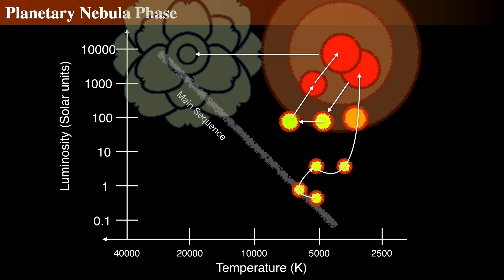As the last of the envelope comes off, the hot carbon-oxygen core of our now-dead Sun-like star is unveiled. As seen from the outside, the temperature goes from 4,000 Kelvin, as seen in the envelope's gases, to 120,000 Kelvin, the supremely hot laid bare core.